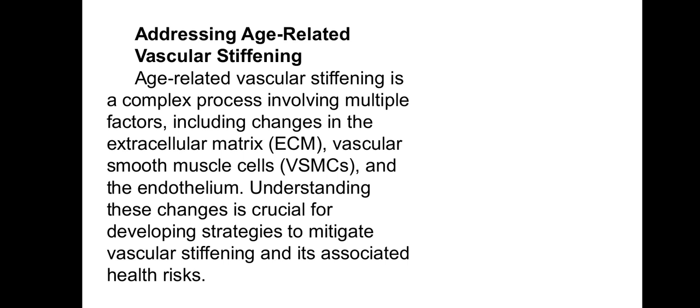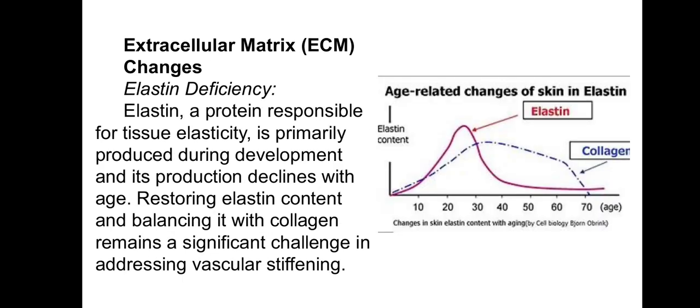Addressing age-related vascular stiffening. As I said, vascular stiffening is probably the most important factor which leads to accelerated aging. This is the most important area and the best way to invest our time — to reverse vascular stiffening. Age-related vascular stiffening is a complex process involving multiple factors including changes in the extracellular matrix, vascular smooth muscle cells and endothelium. Understanding these changes is critical for developing strategies to mitigate vascular stiffening and its associated health risks.